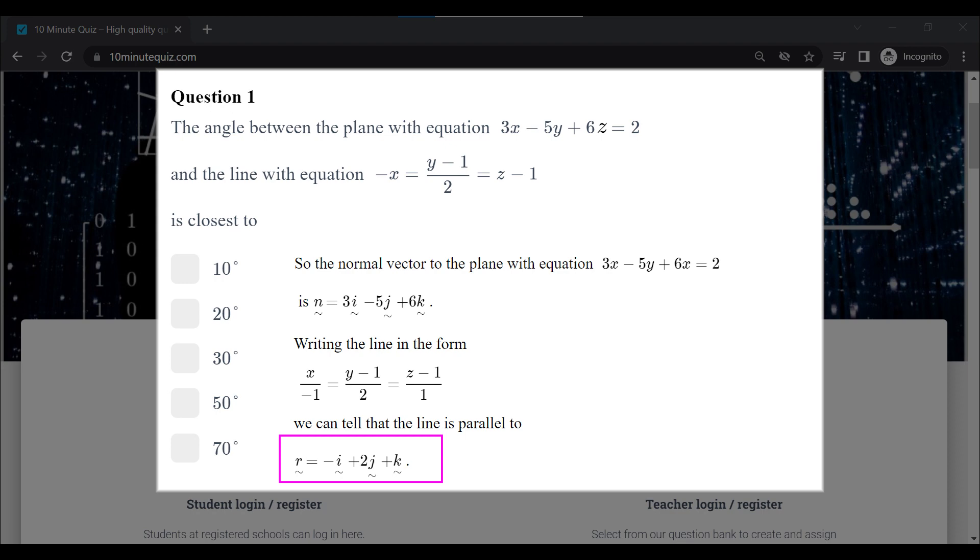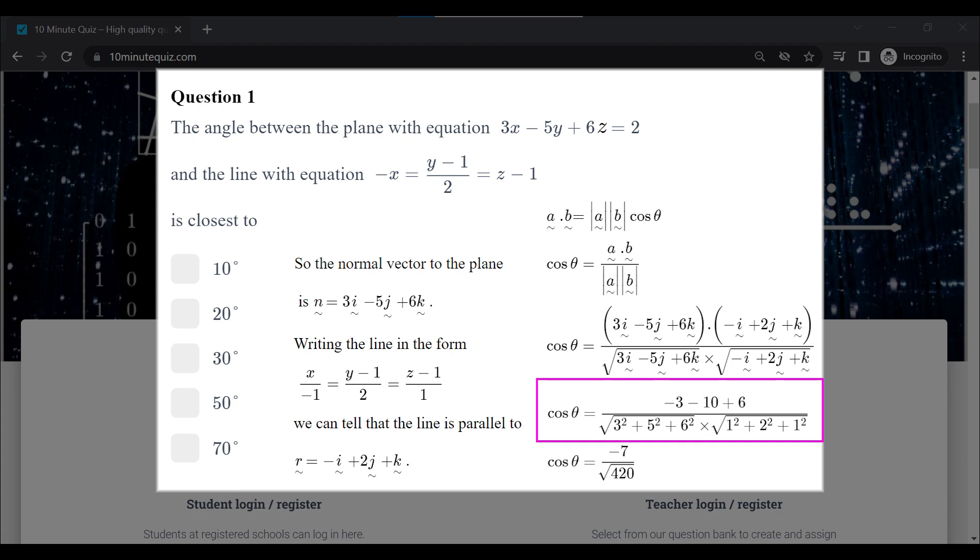We've got a vector parallel to the line and our normal vector. We want to find the angle between those two vectors, so we use our scalar product formula: a.b equals length of a times length of b cosine theta. So cosine theta equals a.b divided by length of a times length of b. In this case, the dot product on the top will be negative 3 minus 10 plus 6, divided by square root of 3 squared plus 5 squared plus 6 squared, times square root 1 squared plus 2 squared plus 1 squared.